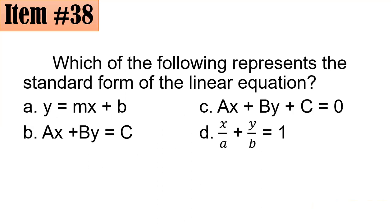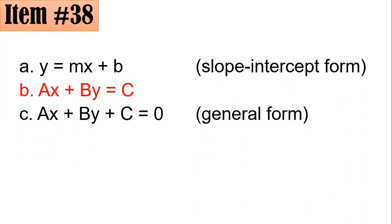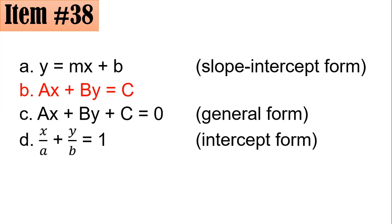Item 38: which of the following represents the standard form of a linear equation — y equals mx plus b; Ax plus By equals C; Ax plus By plus C equals 0; or x over a plus y over b equals 1? The first is slope-intercept form. The correct answer is letter B: Ax plus By equals C. The form Ax plus By plus C equals 0 is general form, and x/a plus y/b equals 1 is intercept form.